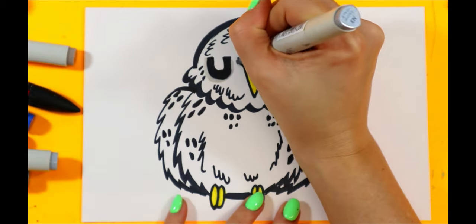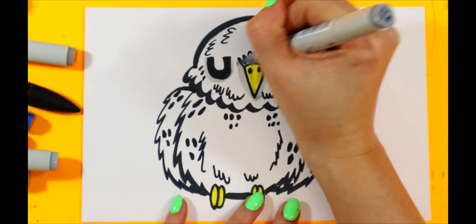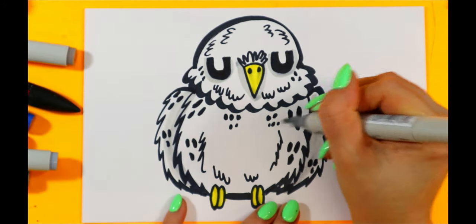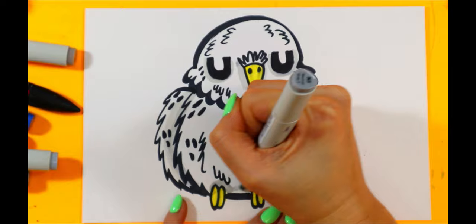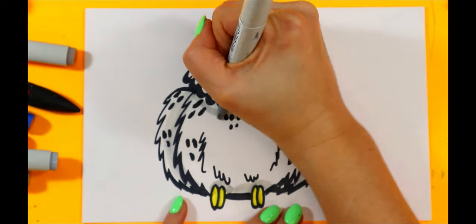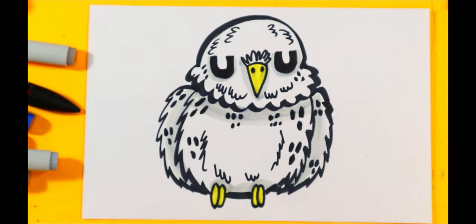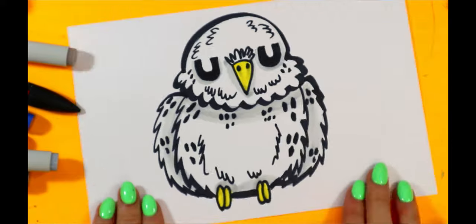So it's going under the eyes, around the wings, around the feet, and under the neck. And just like that, our little snowy owl is done.